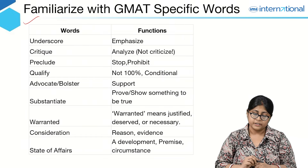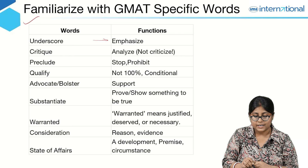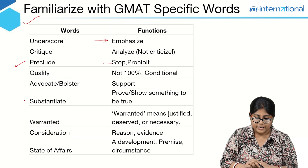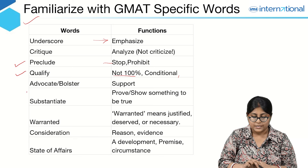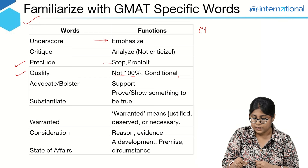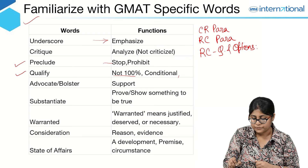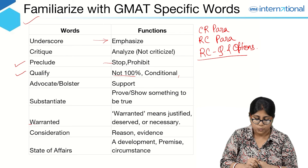Here are some words very specific to GMAT that you should learn. 'Underscore' means to emphasize. 'Preclude' means to stop. 'Qualify' means not 100%, or conditional. 'Advocate' means support. These words can show up in a CR paragraph, in an RC paragraph, as well as in RC questions and answer options. To get to the right answer choice, you need to correctly understand and identify what these words mean.